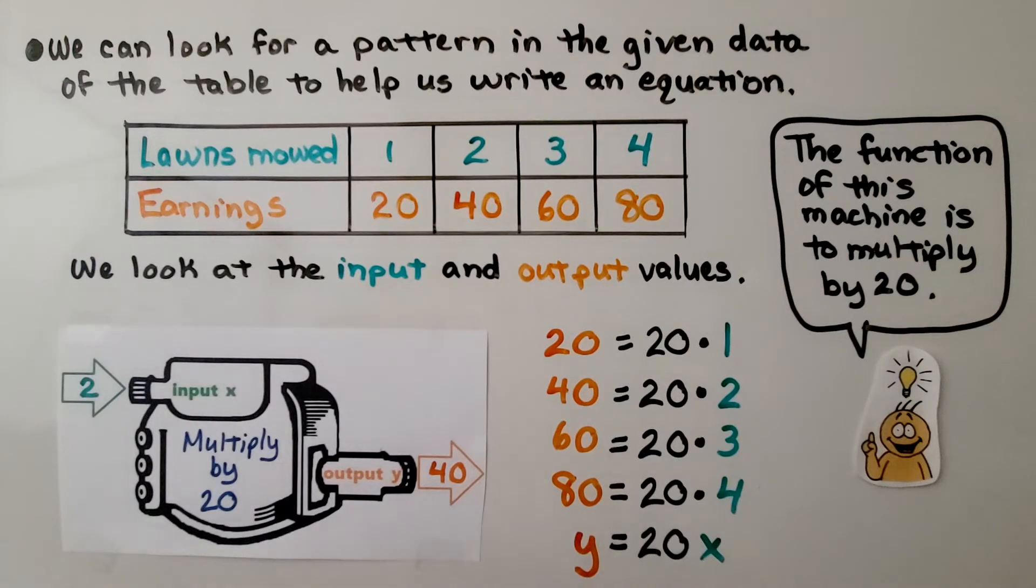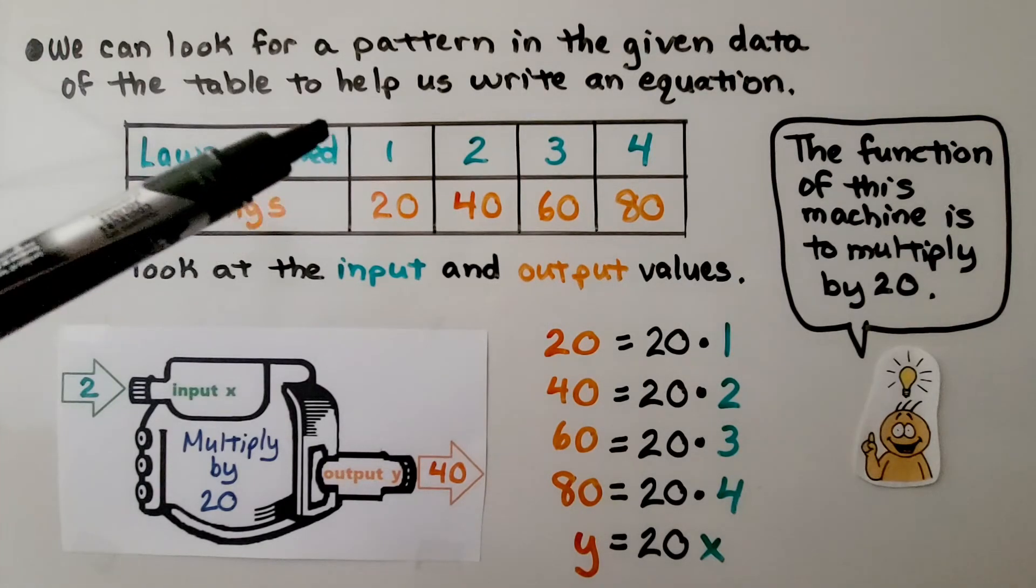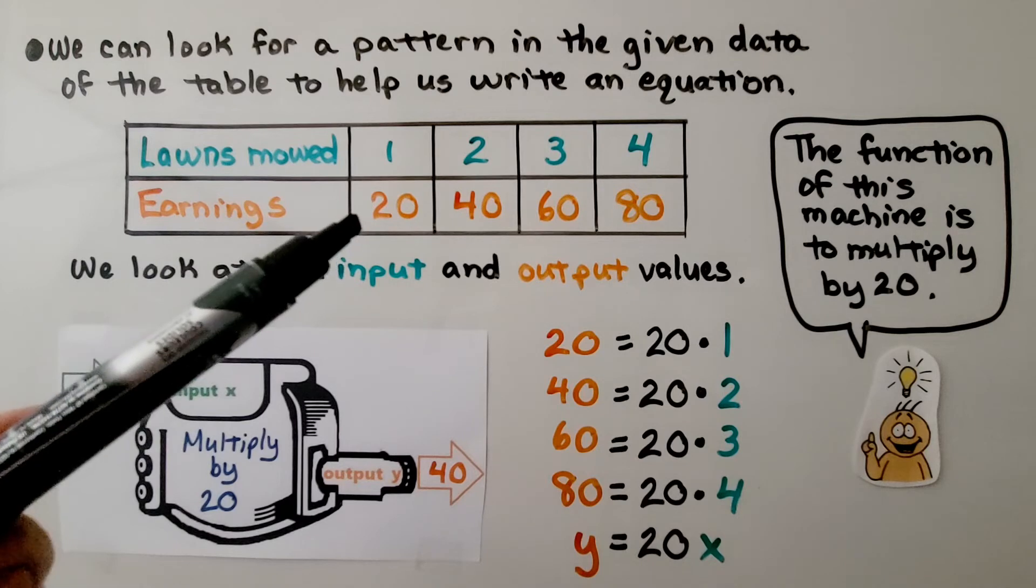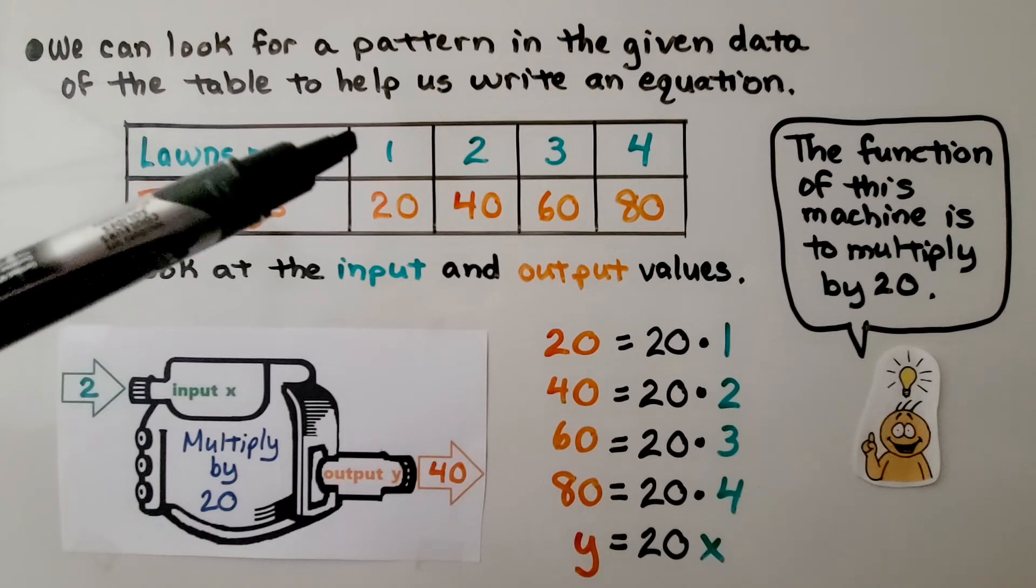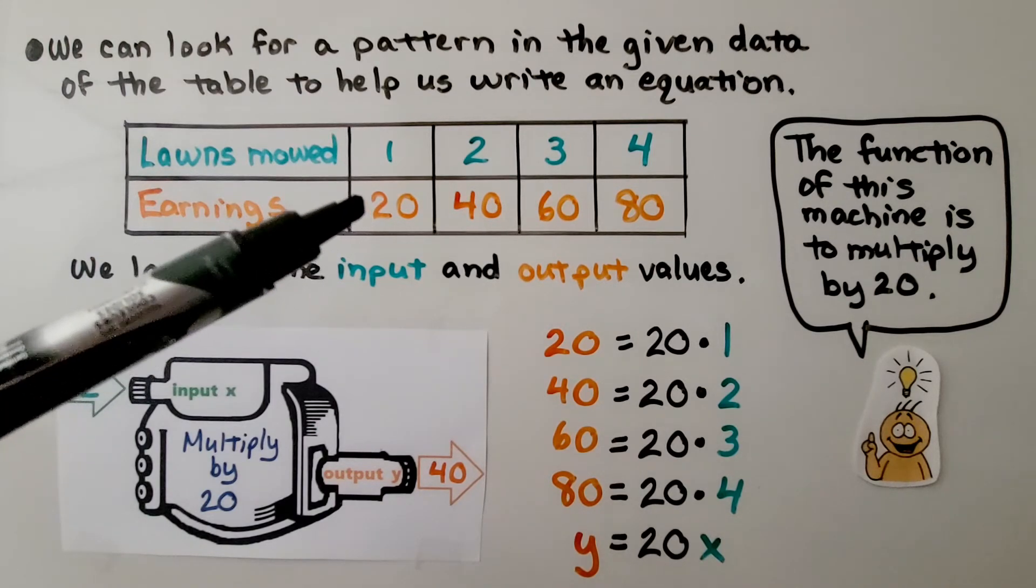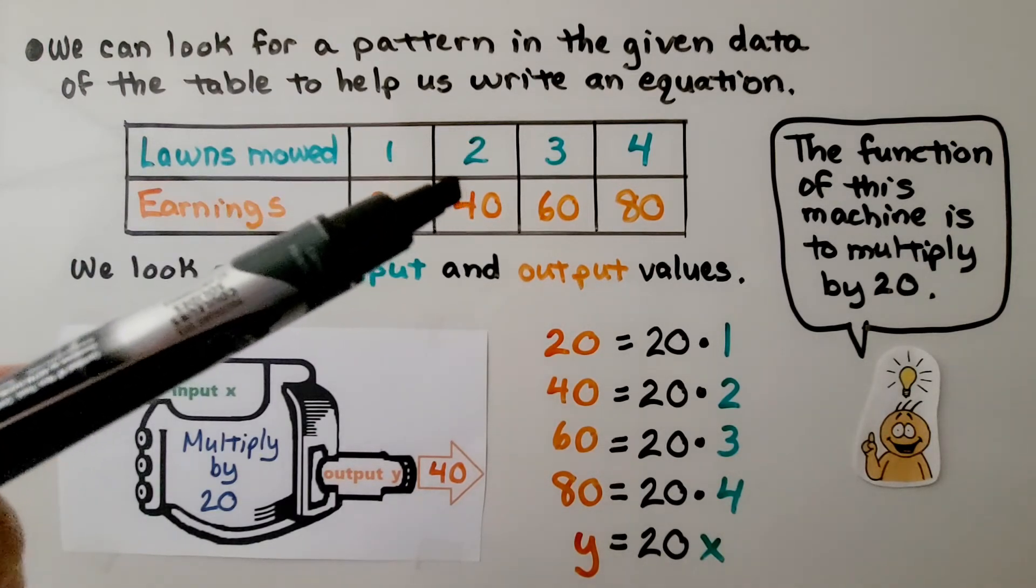Here we have a table of the number of lawns that are mowed and the earnings. We can look for a pattern in the given data of the table to help us write an equation. We look at the input and output values. If he mows one lawn, it's $20. Two lawns is 40.